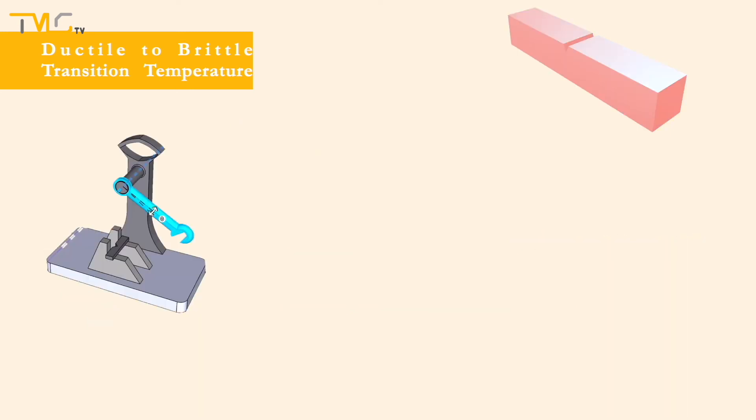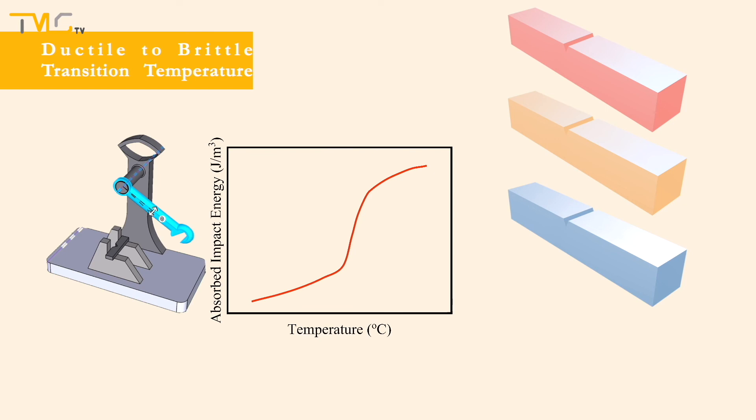Ductile-to-brittle transition temperature can be determined by Charpy and Izod tests, via testing the same material at various temperatures. If a specimen shows a drastic decrease in notch toughness below a certain temperature, this means that the specimen shows ductile-to-brittle transition. Then, a new set of temperatures can be selected around the temperature where this behavior is observed to pinpoint the ductile-to-brittle transition temperature precisely.